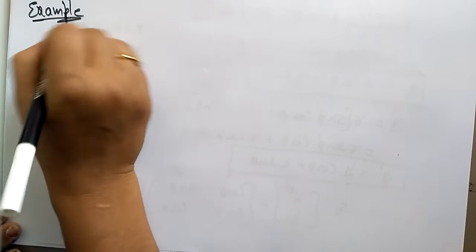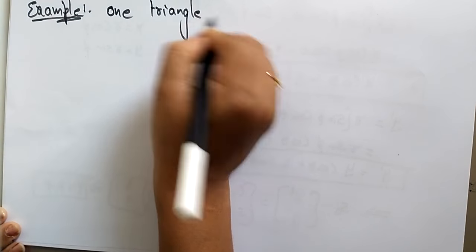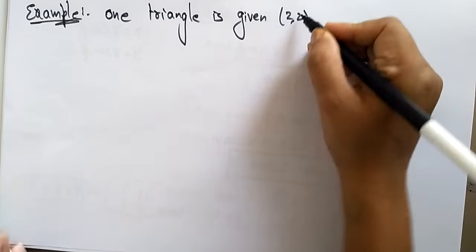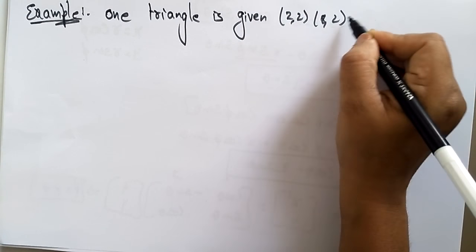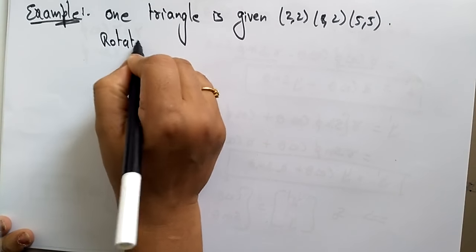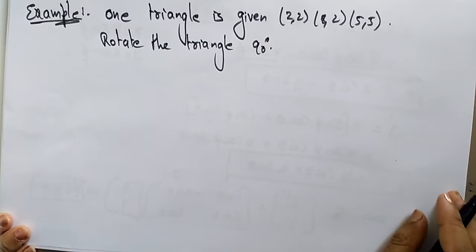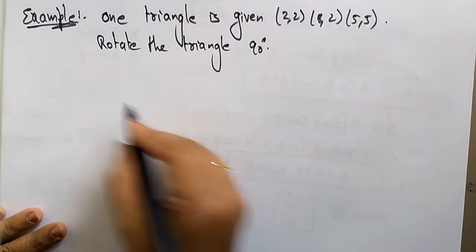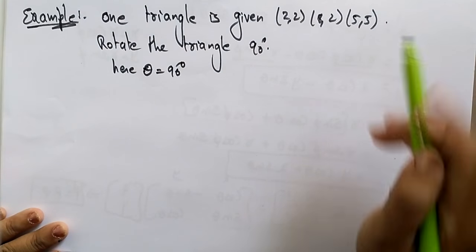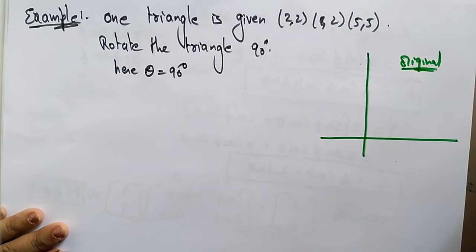Let me take a simple example to explain rotation. A triangle is given with vertices A(2, 2), B(8, 2), and C(5, 5). Rotate the triangle 90 degrees. So here theta = 90 degrees.